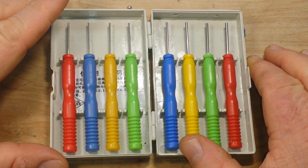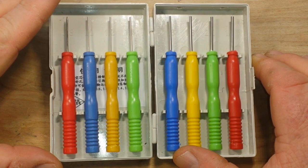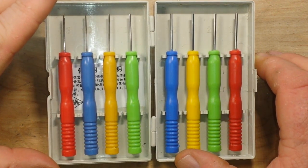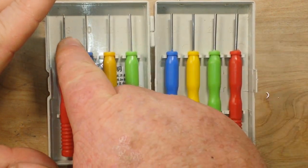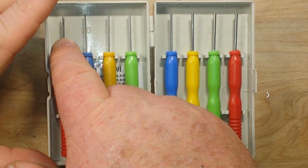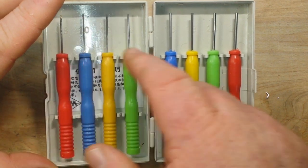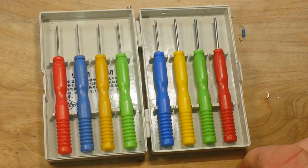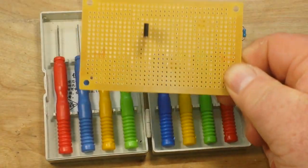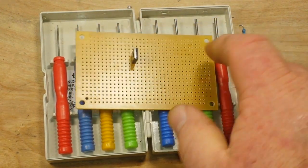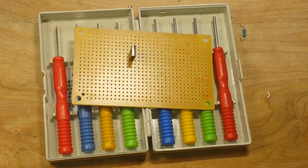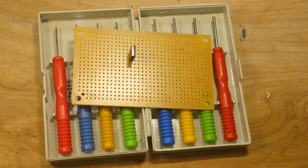So this kit is from eBay. It costs about five dollars and it has sizes from 0.8 millimeters all the way up to 1.2 millimeters. And you simply use whatever largest size will fit through the holes in your board.